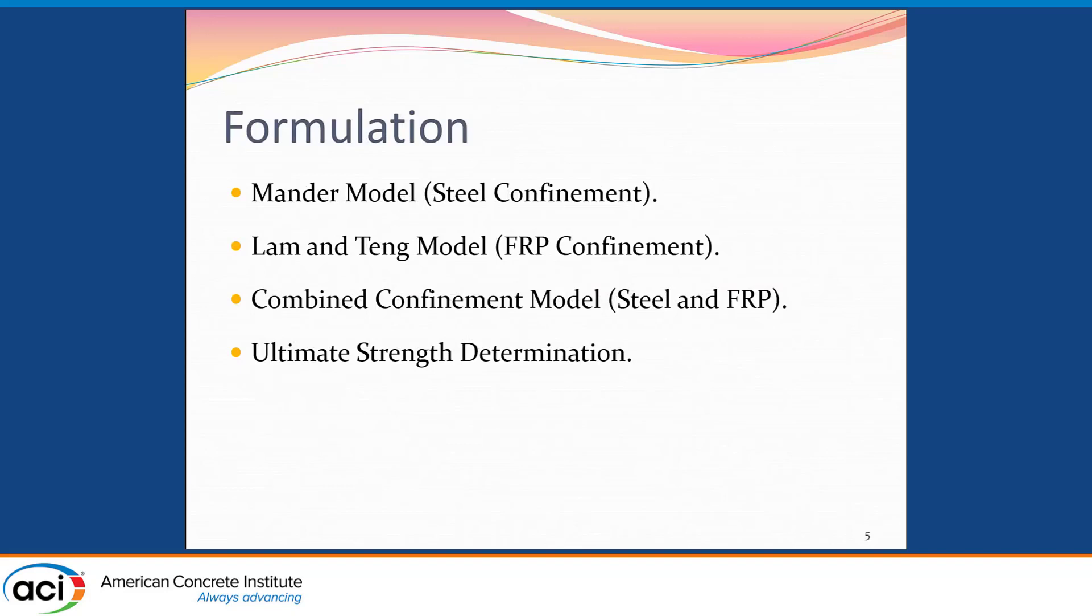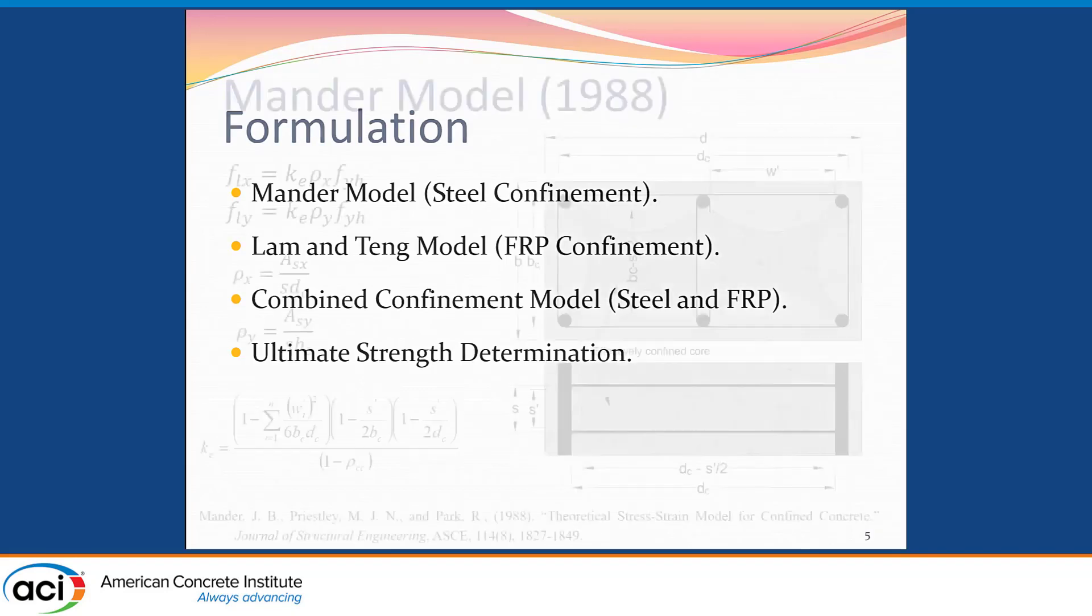Going into formulation, our work was based on two models, one for steel and one for FRP. The steel model used was Mander model. For FRP, we utilized Lam and Teng model. Based on these two models, we came up with a combined confinement model that accounts for the combined confinement, the hybrid confinement effect from the two systems. And we have gone to extend the effect of that model to account for when FRP wraps are not provided continuously through the height of the column.